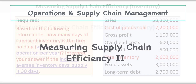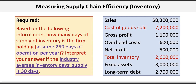Here's the requirement and data for our problem. Based on the following information, how many days of supply of inventory is the firm holding, assuming 250 operating days per year? Then we're asked to interpret the answer if the industry average inventory day supply is 30 days. We're given some basic financial statement information as shown in the blue box. We won't need all those numbers, just the ones relevant to our inventory calculations — basically just the cost of goods sold and total inventory.